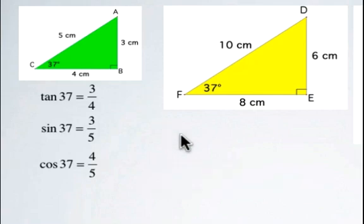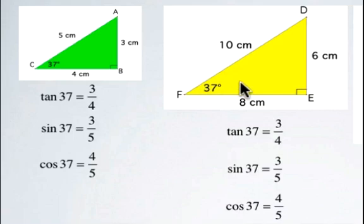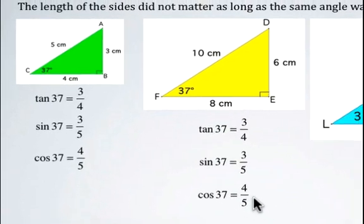When we looked at the same ratios for the 37-degree angle in the larger triangle here, we noticed the opposite over adjacent was 6 over 8, which reduces to 3 over 4. The sine ratio is 6 over 10, which in lowest terms is 3 over 5. And the cosine ratio is 8 over 10, which is adjacent over hypotenuse, reducing to 4 over 5.